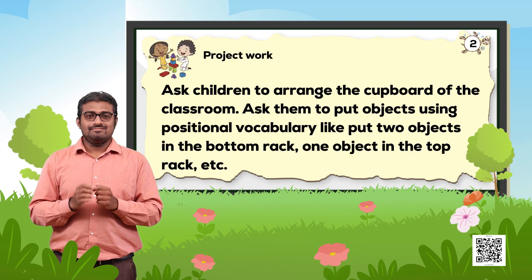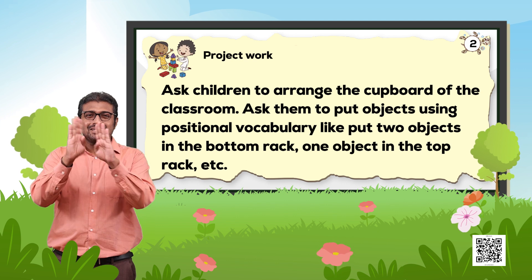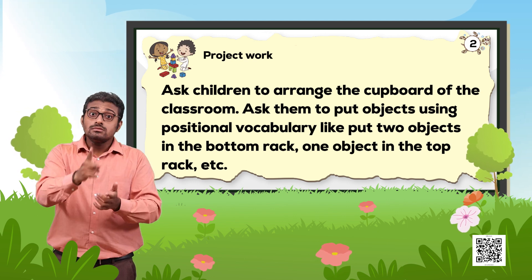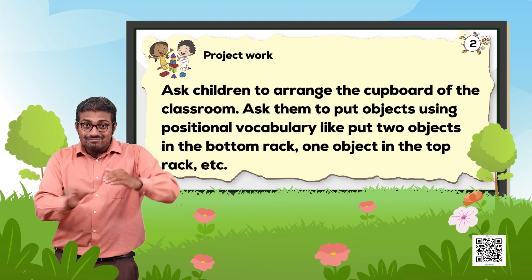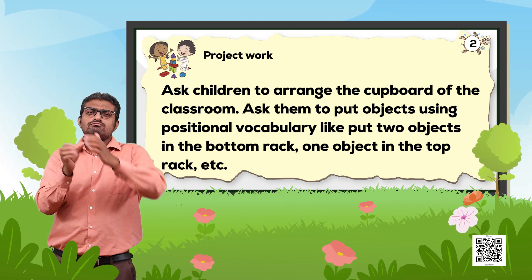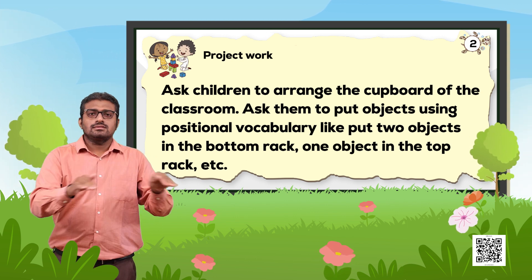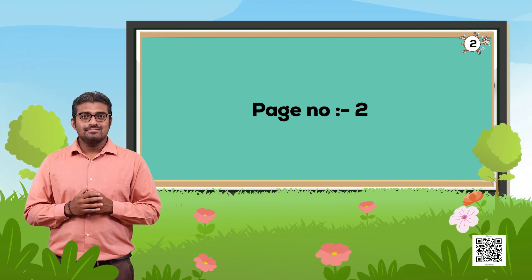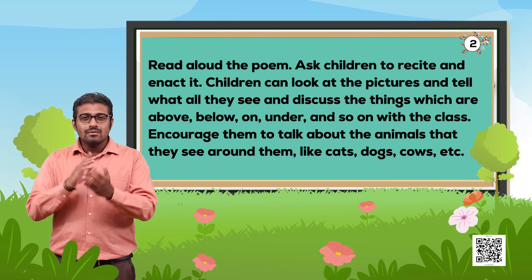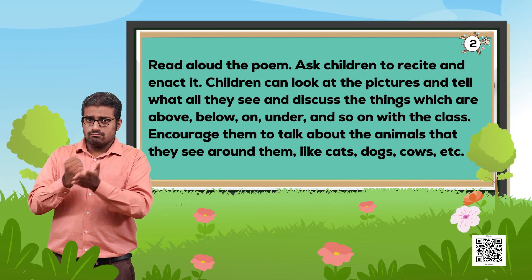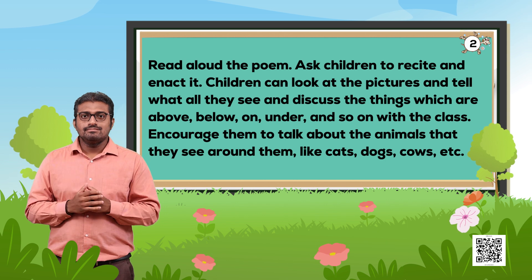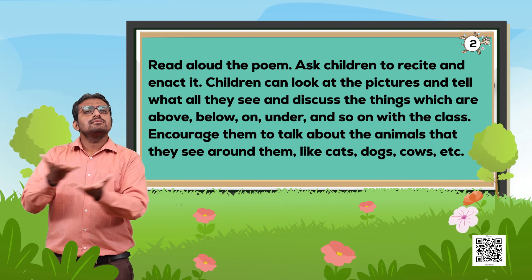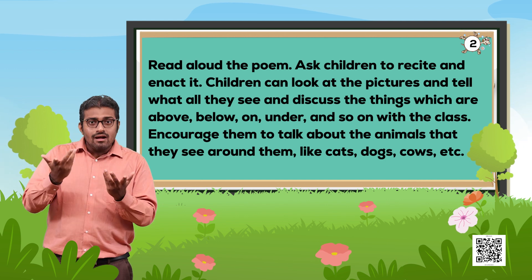Project Work: Ask children to arrange the cupboard in the classroom. Ask them to put objects using positional vocabulary like put two objects in the bottom rack, one object in the top rack, etc. Read aloud the poem and ask children to recite and enact it. Children can look at the pictures and tell what they see, discussing things which are above, below, on, under, and so on with the class.